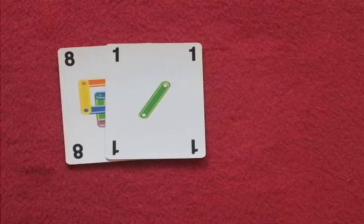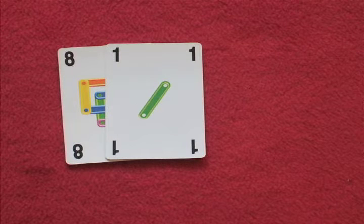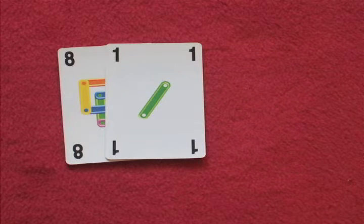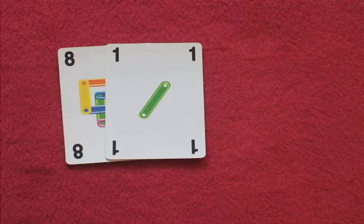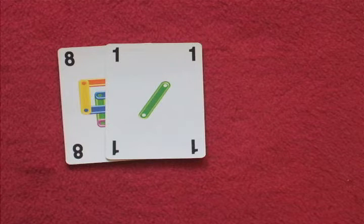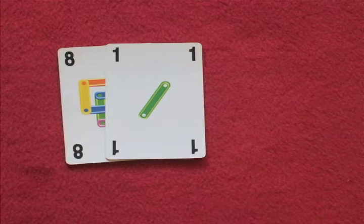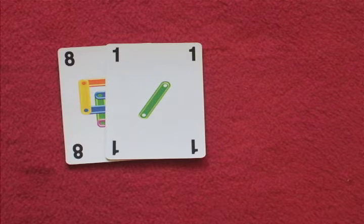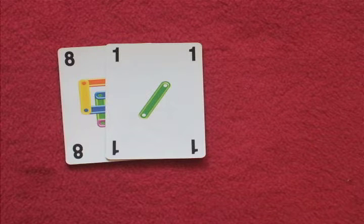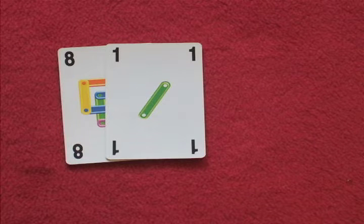If the next card thrown down in this case is 8 plus 1, 9, or 8 minus 1, 7, the first player to shout Oi wins all the cards and places them in their hand. When the first player has no cards left, they are out of the game, and so on. And the last player remaining who has won all the cards wins the game.